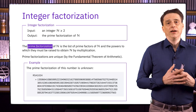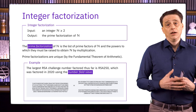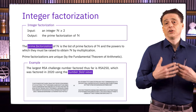The largest RSA challenge number to have been factored so far has 250 decimal digits. Here's the prime factorization of RSA 250 — it was done in 2020 using an algorithm known as the number field sieve, and it was a collective effort involving tens of thousands of computers around the world.